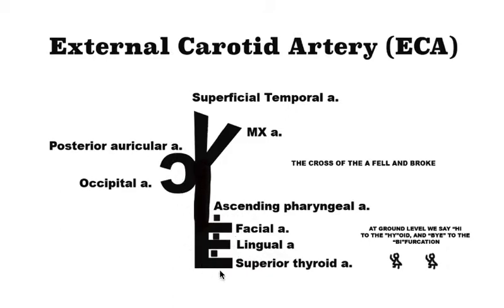There are three anterior portions, two posterior portions, and then two terminal branches. And then in the medial there's this one small branch — the ascending pharyngeal. One way to remember the ascending pharyngeal is to remember that the crossbar of the A has descended to form the ascending pharyngeal, and that's going to branch basically near the level of the superior thyroid artery.